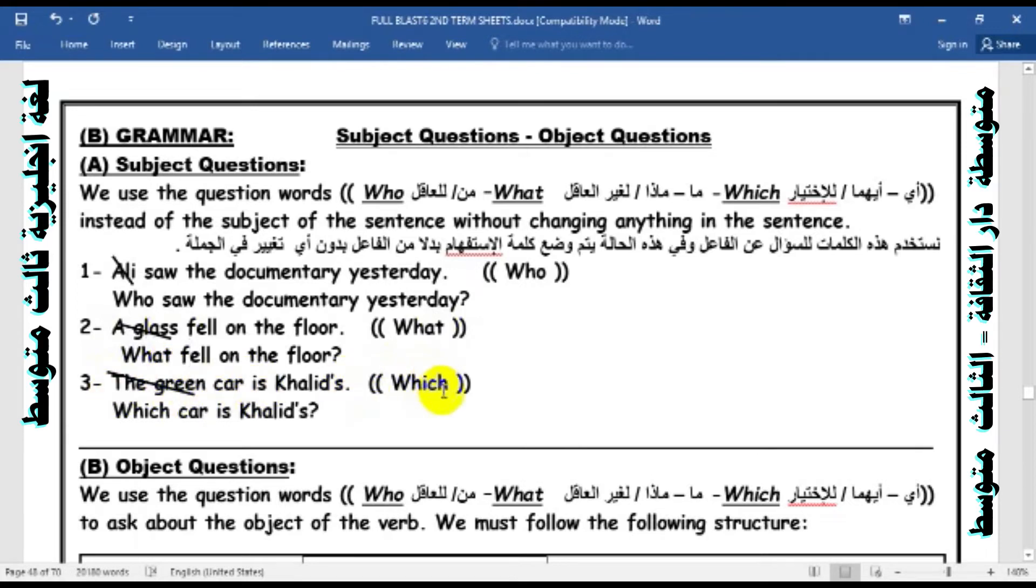Number three: The green car is Khalid's. Try to ask a wh-question by using which. Yes, we can. Which car is Khalid's? The topic is very clear. When asking about the subject, there is no change. Don't touch the sentence. We are going to drop the subject only and put the suitable question word.